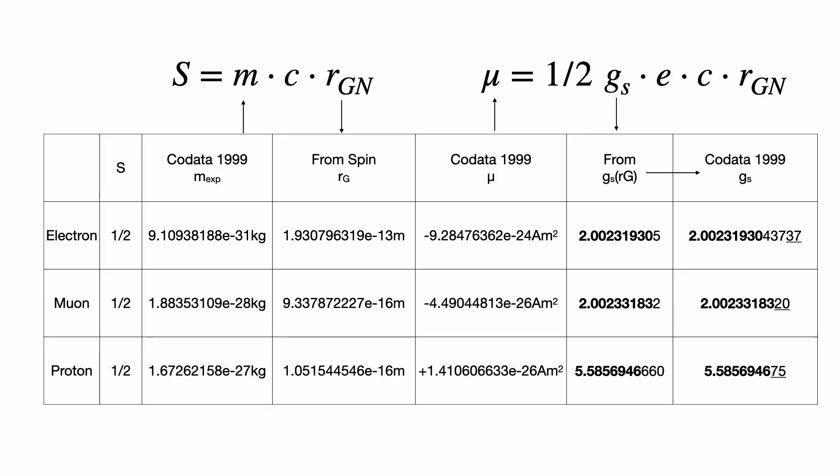We take the experimental data of electron, muon and proton. We take the experimental mass of codata and use the spin to calculate the corresponding radius. Plugging this into the formula for the magnetic moment, we can then compare the values for the gyromagnetic ratio. The fit is close to the experimental values, as it was to be expected.